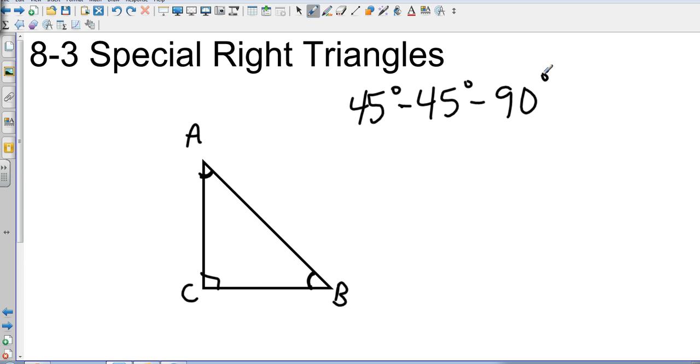It is an isosceles triangle because it has two congruent angles, so it also has two congruent sides. I'm going to write my cursive L's. Each one of those legs is going to be exactly the same. And then the hypotenuse is going to be whatever the leg is times the square root of 2. The legs are congruent because it's an isosceles triangle, and the hypotenuse is the leg times the square root of 2.